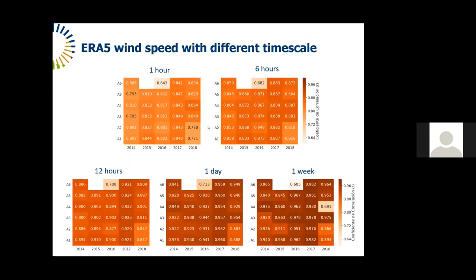The first step was studying the impact of changing the time scale of ERA-5 wind speeds. Measured and ERA-5 wind speeds were compared by performing averages every one hour, six hours, twelve hours, one day, and one week. As the time scale increases, the correlation coefficient between these wind speed datasets also increases. A one-day average was selected since it showed the most significant increase in correlation coefficient.